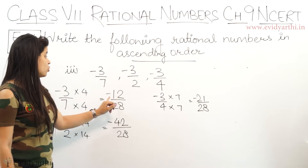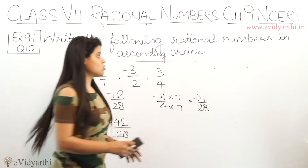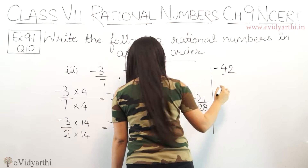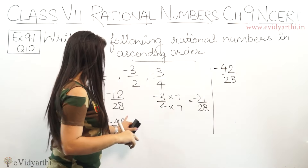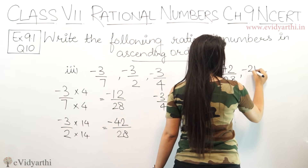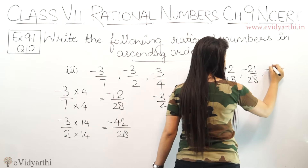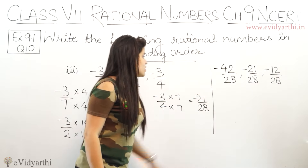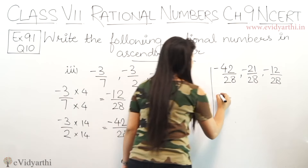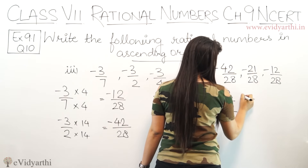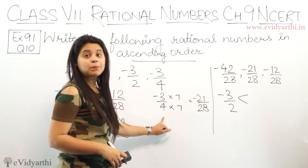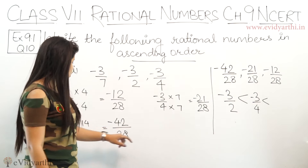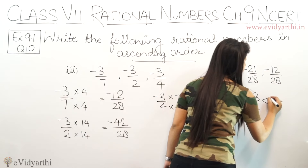Numbers minus में हैं: minus 12, minus 42, minus 21. सबसे छोटा कौन सा होगा? That will be minus 42, because this is the largest — negative है तो जितना बड़ा number उतना ही छोटा. So: minus 42, then minus 21, and then minus 12. आप इनके actual numbers लिख देते हैं: minus 42 upon 28 — minus 3 upon 2 से आया. Next minus 21 upon 28 — minus 3 upon 4 से. And last minus 12 upon 28 — minus 3 upon 7 से. So ascending order: minus 3 upon 2, minus 3 upon 4, minus 3 upon 7.